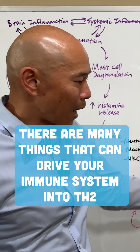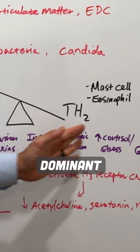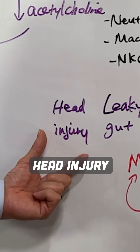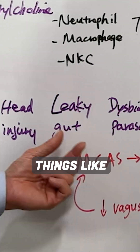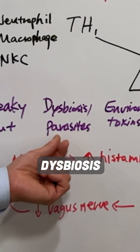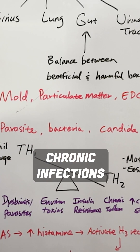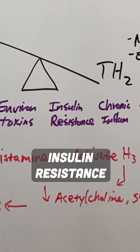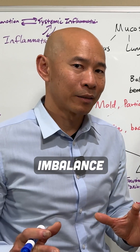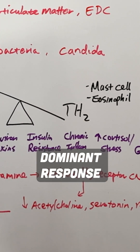There are many things that can drive your immune system into a TH2-dominant situation. Things like head injury from a concussion, leaky gut, dysbiosis and parasites with chronic infections, environmental toxins, insulin resistance — having blood sugar imbalance can also create this TH2-dominant response.